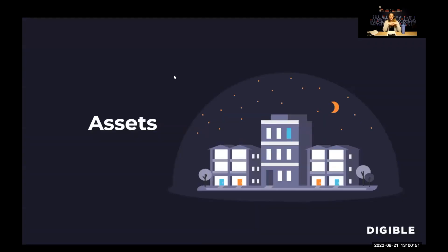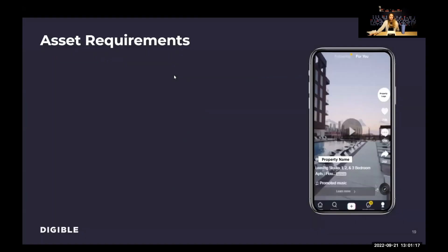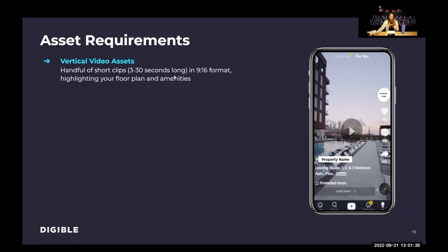I also mentioned the idea of barriers to entry. The biggest barrier to entry I have personally felt with TikTok, not just professionally but personally as well, really comes down to the assets — the idea that you have to create a quality video to go onto TikTok. Walking through the asset requirements: you do need the vertical video asset — a handful of them if you want to splice content — and you want them to highlight your floor plan and amenities. The great news is you already have the great floor plans and amenities. All you really need is to walk out to them with your phone or smart device in hand to take those videos.